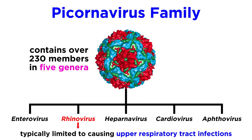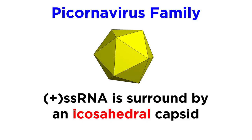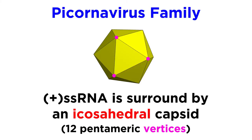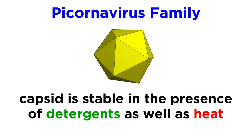Now let's talk about structure. The positive strand RNA of picornaviruses is surrounded by an icosahedral capsid, which is that soccer ball looking shape we talked about earlier. The icosahedral capsid has 12 pentameric vertices, which are each composed of sets of proteins. For all picornaviruses, the capsid is stable in the presence of detergents or heat, but in the case of rhinoviruses, not in the presence of acid, as we mentioned.